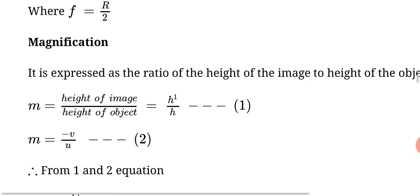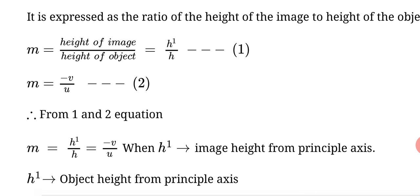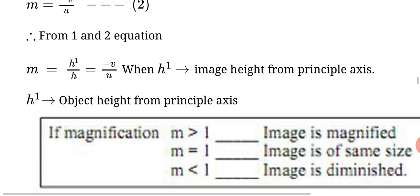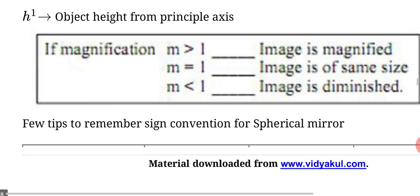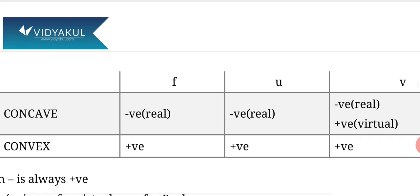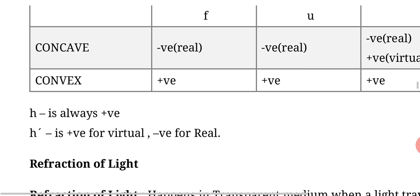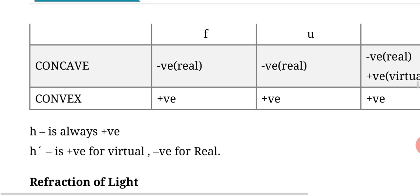We can denote it as small m equals minus v upon u. We can write two equations: H image upon H object equals minus v upon u. If m is less than 1, image is small. If m is greater than 1, image is large. These are main steps for spherical mirror. Next we will discuss a new topic, laws of refraction.